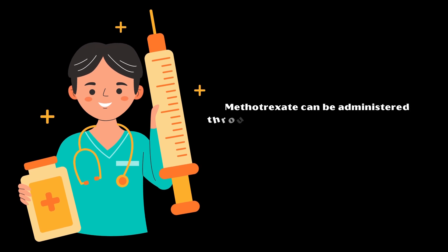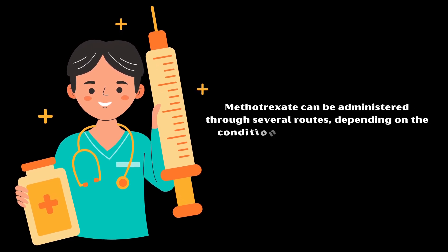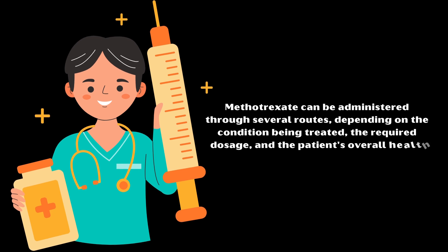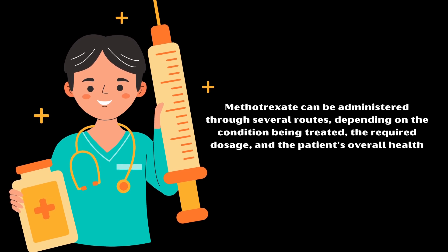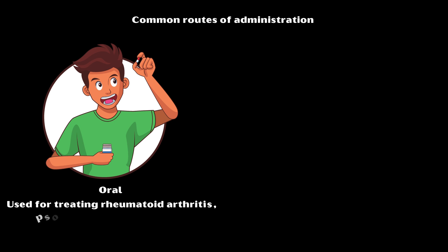Methotrexate can be administered through several routes, depending on the condition being treated, the required dosage, and the patient's overall health. Common routes of administration include oral administration, which is commonly used for treating rheumatoid arthritis, psoriasis, and certain cancers.